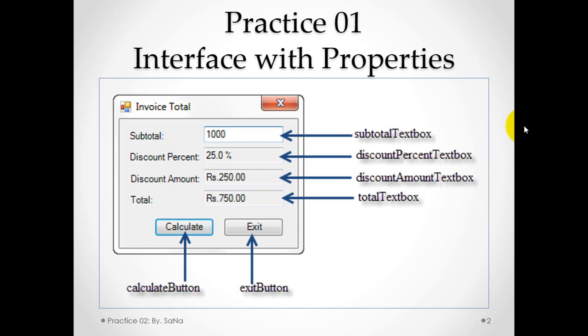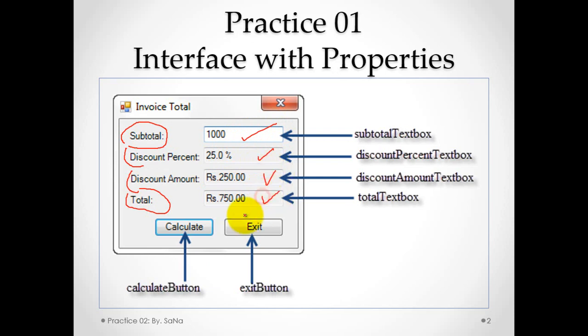For this purpose we will use a Visual Studio application. As you can see, there are four controls used: four label controls, then text boxes — we have four text boxes — and two buttons. So altogether there are four label controls, four text boxes, and two buttons.